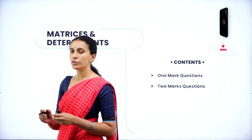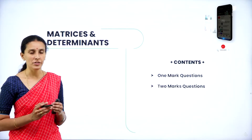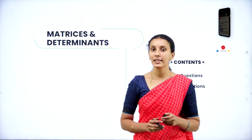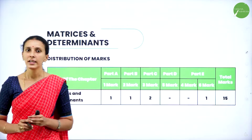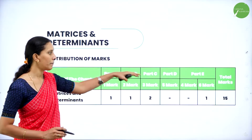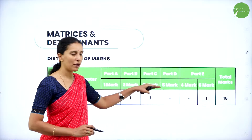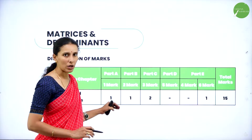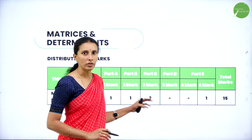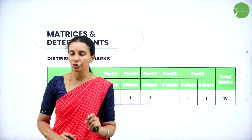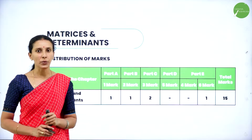We are here at the chapter Matrices and Determinants. In this session we are going to discuss what are the important questions that may arise from this chapter, especially from one-mark and two-mark questions. The question paper contains five sections: Part A, B, C, D, and E, with one, two, three, five, four and six mark questions. From Matrices and Determinants you will have one one-mark question, one two-mark question, one two three-mark question — total six marks — and one six-mark question, giving a total weightage of 15 marks from this chapter. Let's start with the one-mark questions.